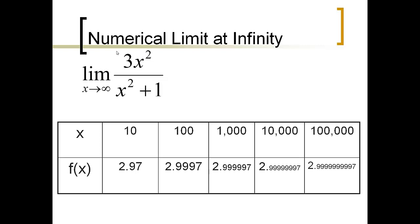If we did this numerically and picked values getting closer and closer to infinity — there is no right-hand side here, we're going to approach it from the left only — if you pick a value of 10 and put it in, you get 2.97. If you pick a value of 100 for x, you get 2.9997. We can pretty well see already this thing's approaching 3, though it never completely gets to 3.